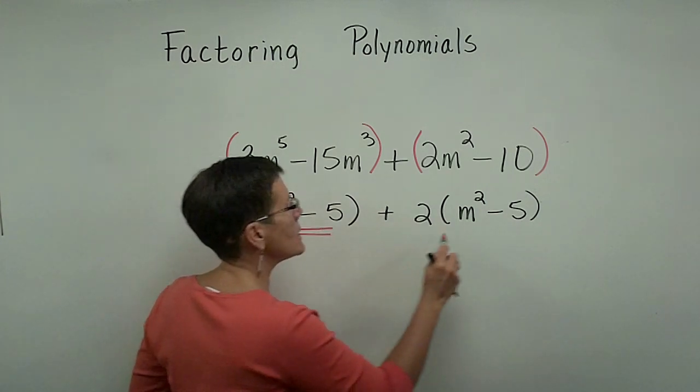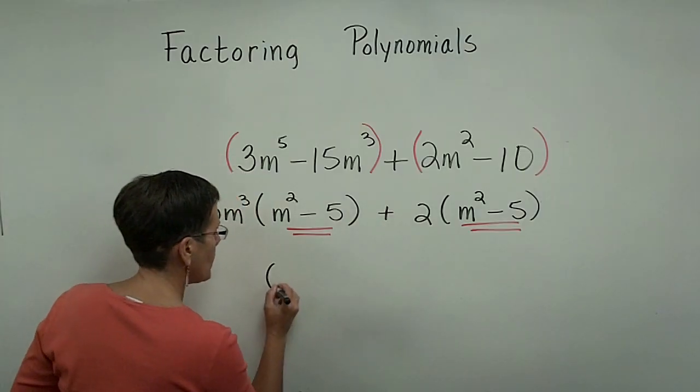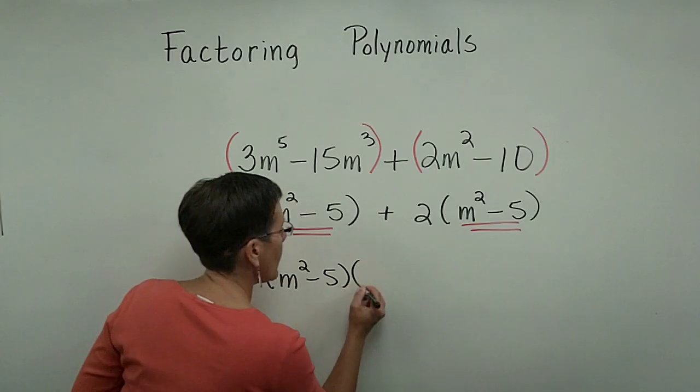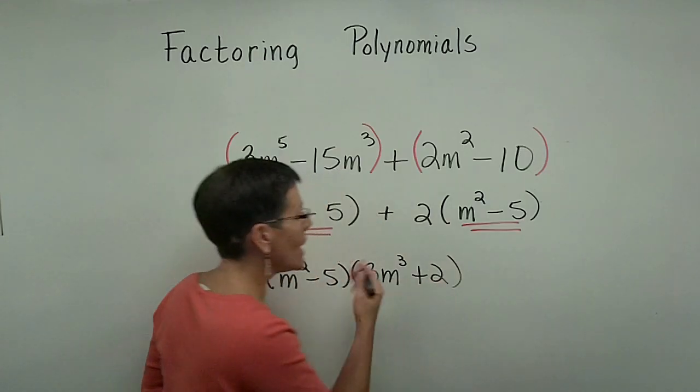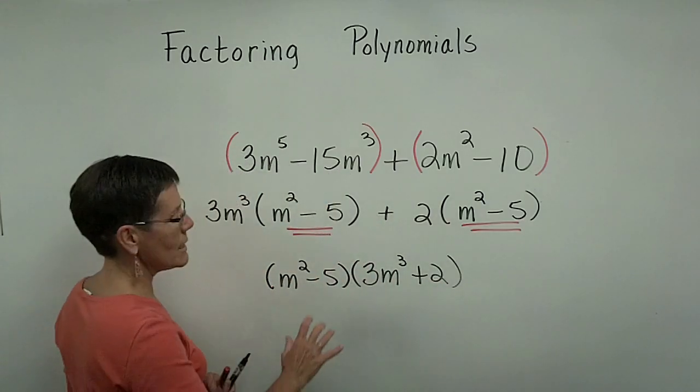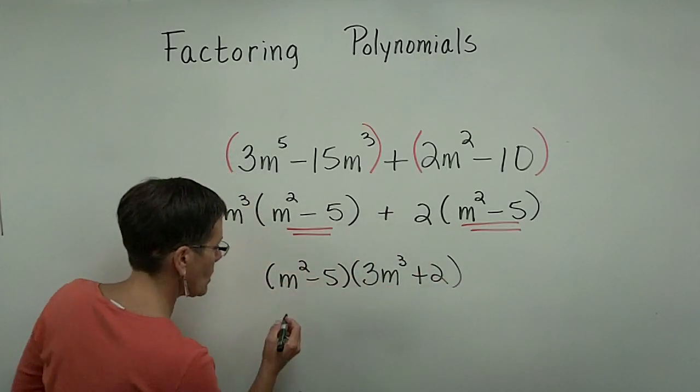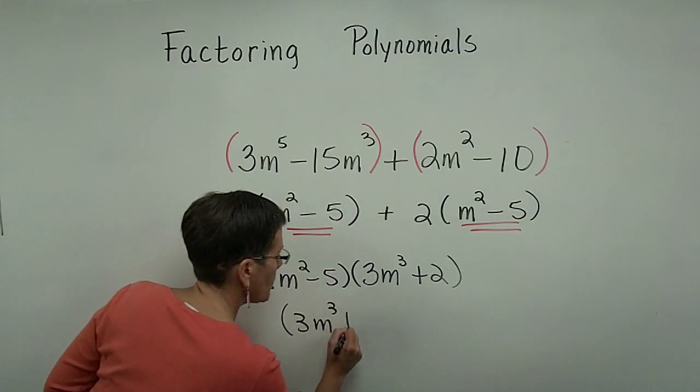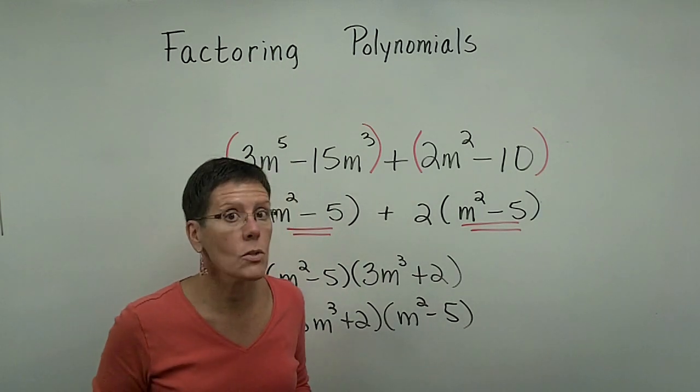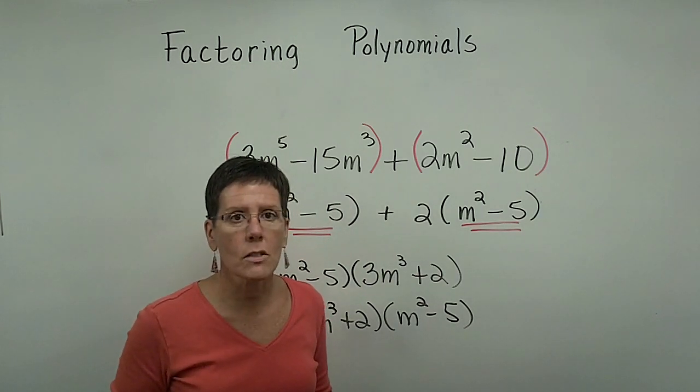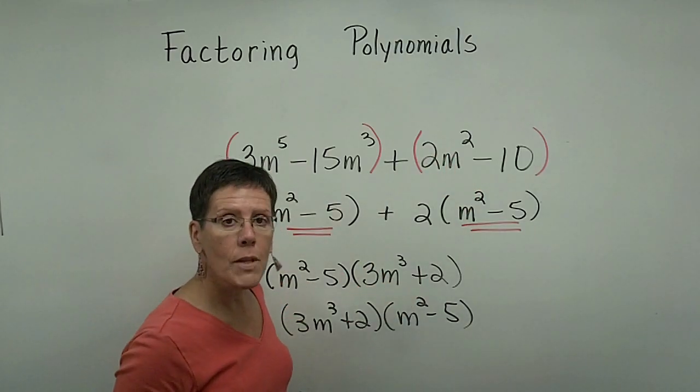If I'm to be successful, these need to match. And when they do, I write them down one time. So I have the m squared minus 5, and then the 3m cubed plus the 2 goes in the other binomial, and I am done. This is in its factored form. You do not need to write it in this order. This binomial could be in the front, and this binomial could be in the back, because multiplication is commutative. You should remember to check this problem when you're done. Multiply it out to see if you have the original problem.